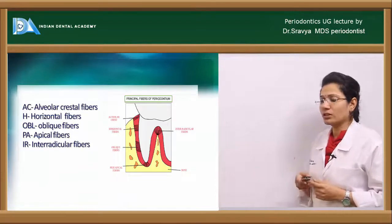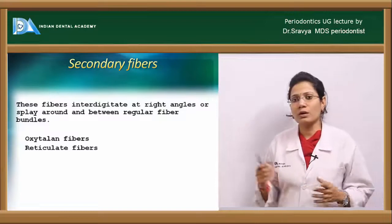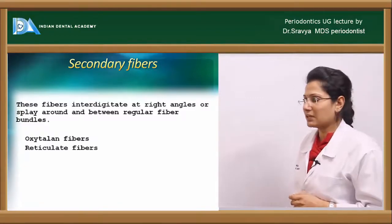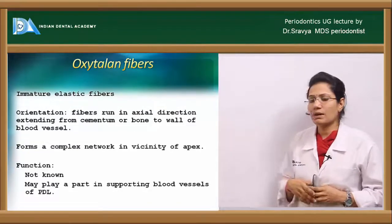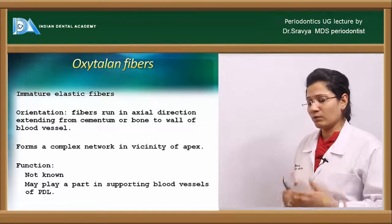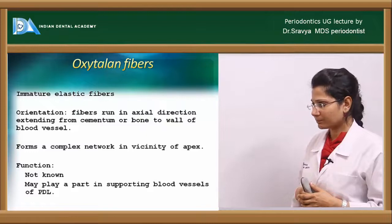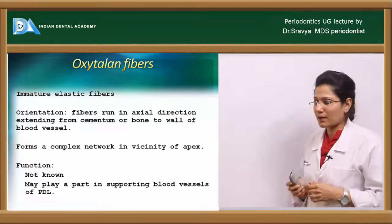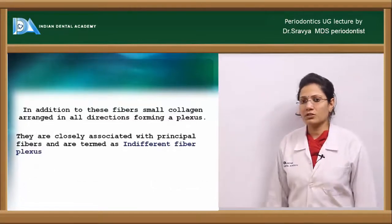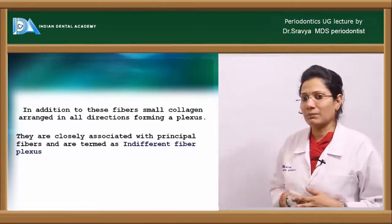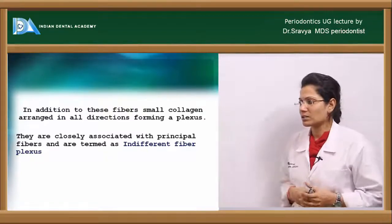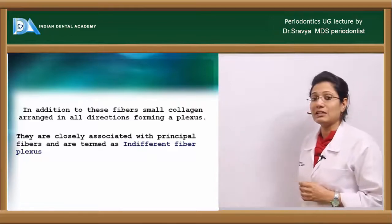The secondary group of fibers interdigitate at right angles and play between the regular fiber bundles, and include oxytalin fibers and reticular fibers. Oxytalin fibers are immature elastic fibers running in an axial direction extending from the cementum or bone to the wall of blood vessels, forming a complex network near the apex. Their function is not fully known but they are said to support blood vessel vasculature of the PDL. There are also small collagen fibers interspersed between the principal fibers, called the indifferent fiber plexus.